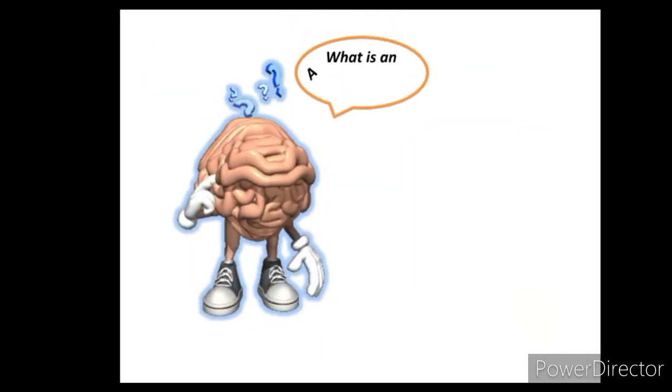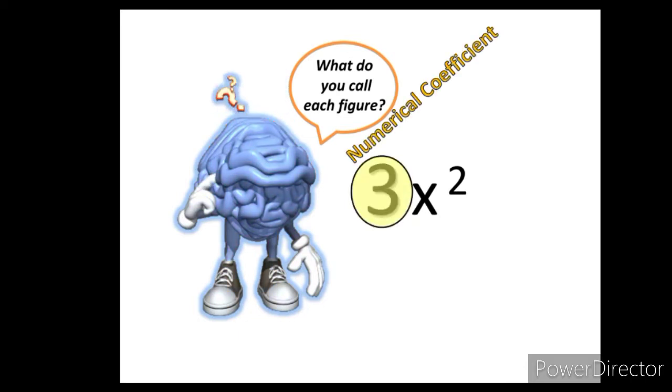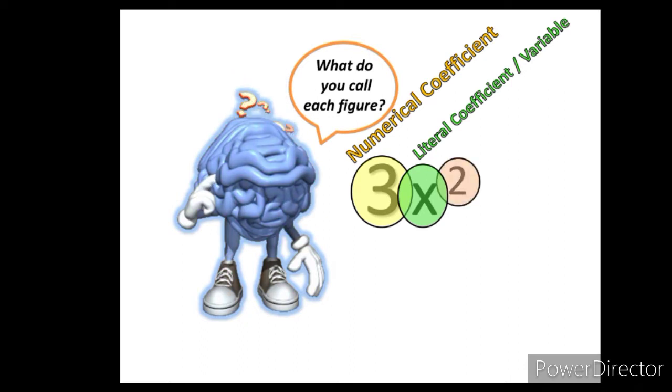What are terms? Well, mathematically speaking, these are algebraic terms. An algebraic term may be a number, or a letter, or a letter with a cute number at the upper right corner, or the combination of all. Now, what do you call each figure? The number is the numerical coefficient. The letter is the literal coefficient or the variable. And the cute number at the upper right corner is the exponent.